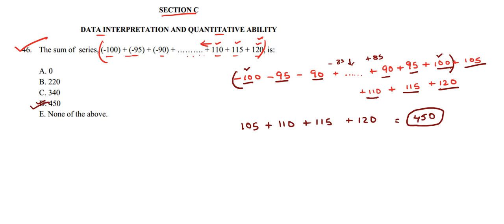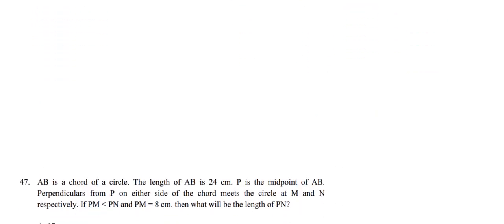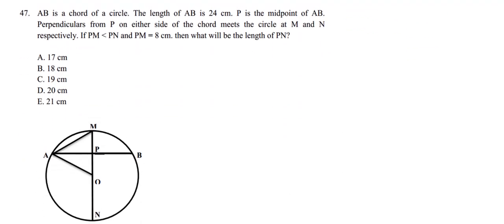Our answer is 450, so option number D matches — hence the correct answer is option D. Now let's move on to question number 47. AB is a chord of a circle. From point A to B we have a chord AB. The length of AB is 24 centimeters. P is the midpoint of AB, so AP will be equal to BP, both being 12 centimeters (that is, 24 divided by 2).